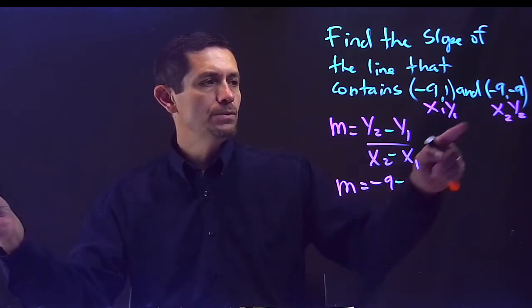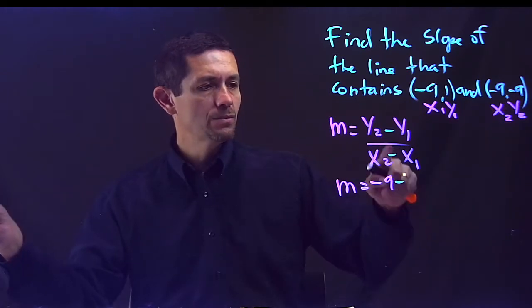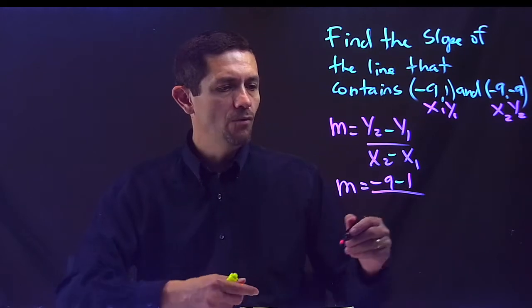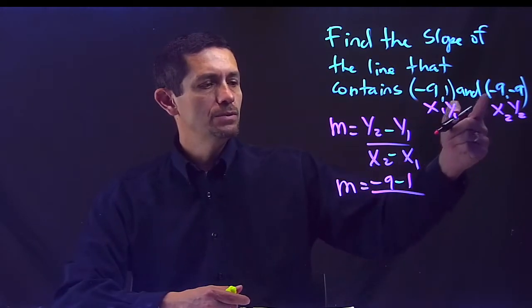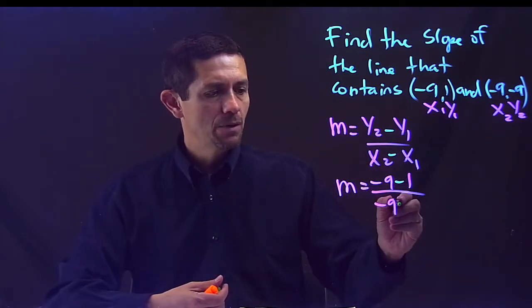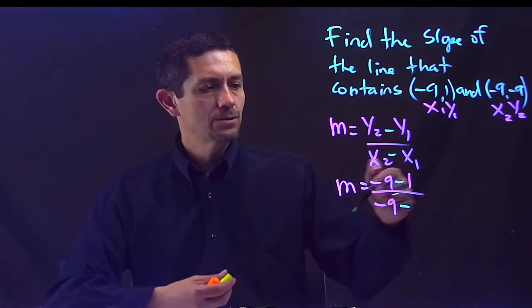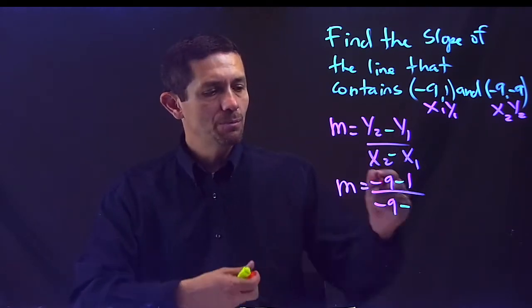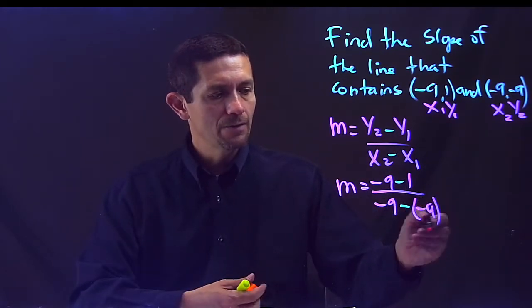y2 is negative 9, minus from the formula, y1 is 1, over x2, x2 is negative 9. Here we go, minus from the formula, and x1, but x1 is also a negative, so I need to put a parenthesis and a negative 9.